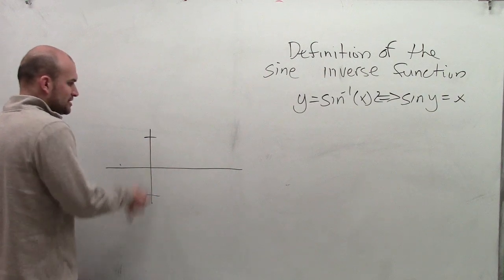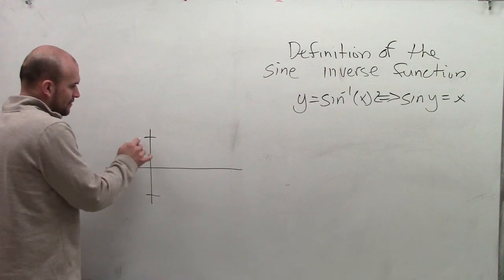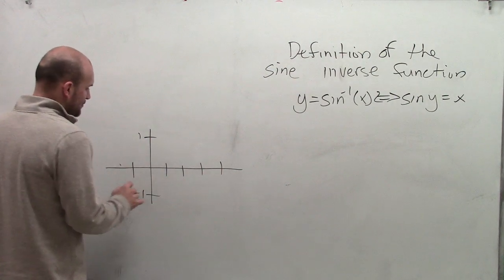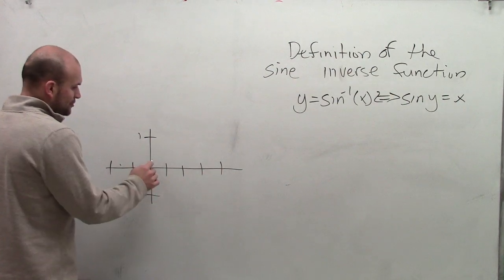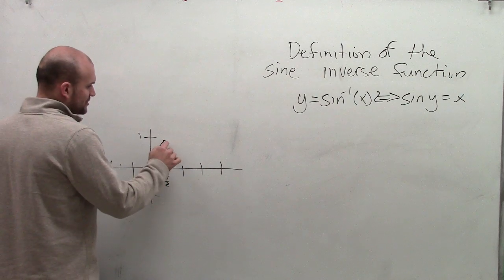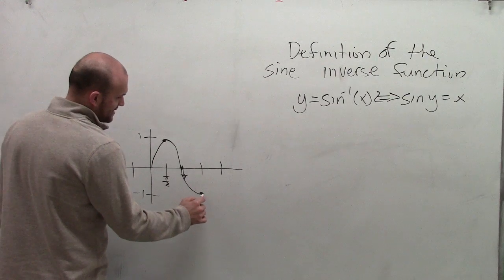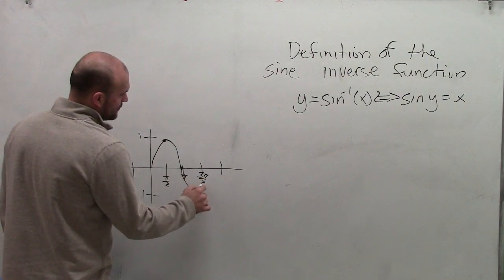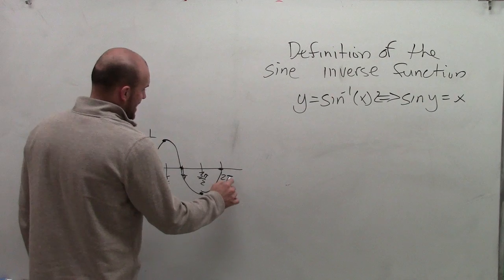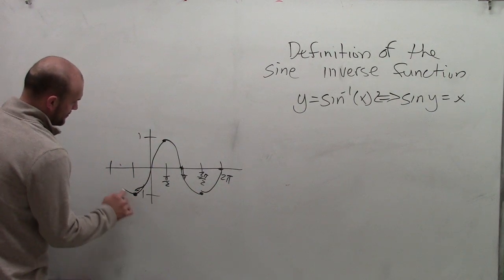The sine function originally has a range of negative 1 to positive 1. When graphing the initial period, we know it goes up to its max, comes back down at pi, goes down to its minimum at 3 pi over 2, and then completes one whole cycle at 2 pi. It also goes in the negative direction.